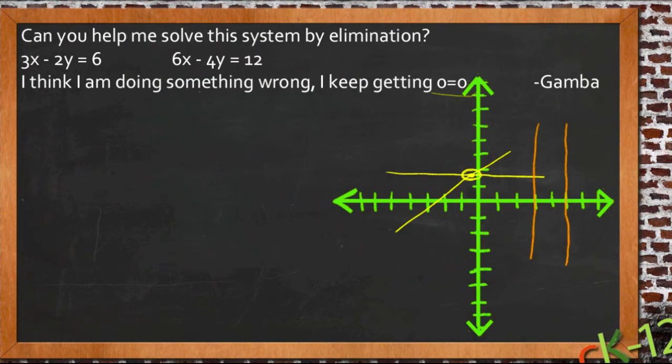And then the third possibility is that you have two lines that are actually right on top of each other. We have one line right here, and then the other one is directly on top of it. So that every solution that works for one equation also works for the other equation.